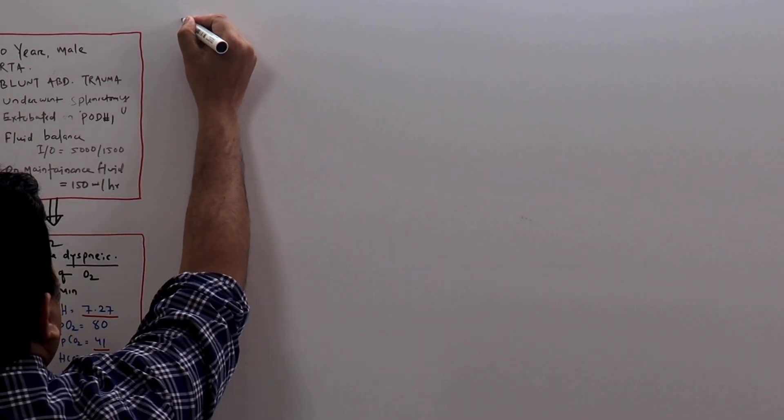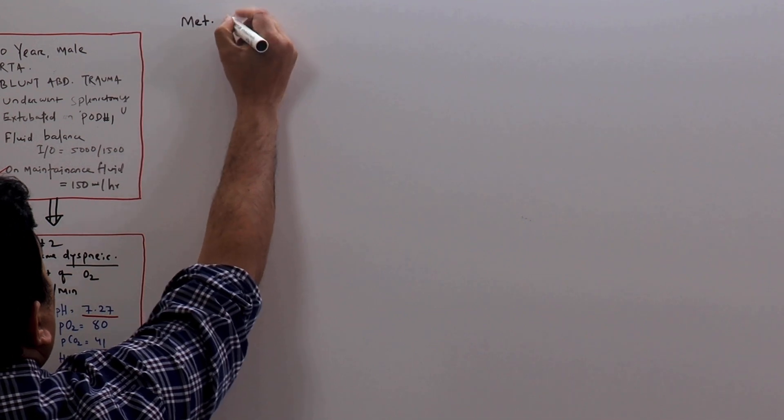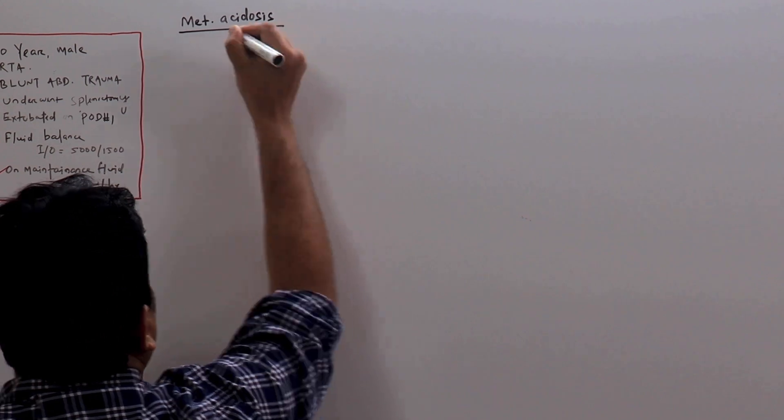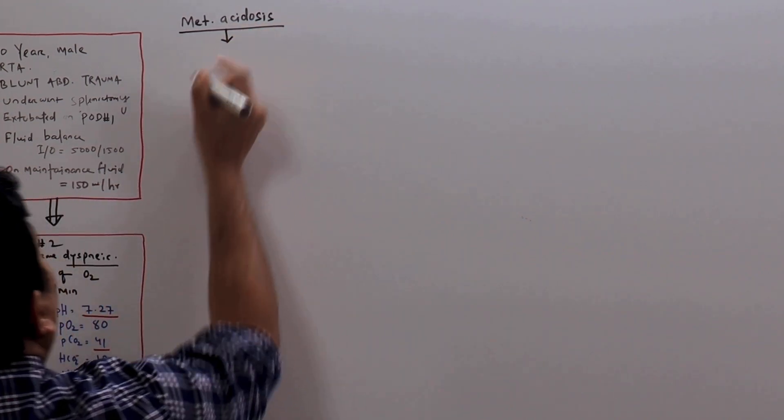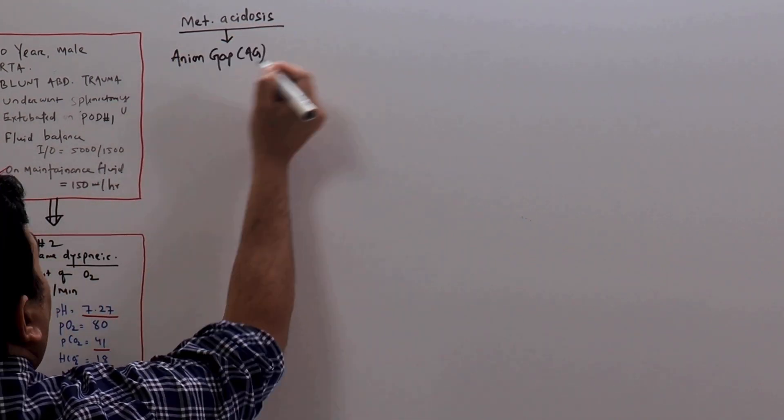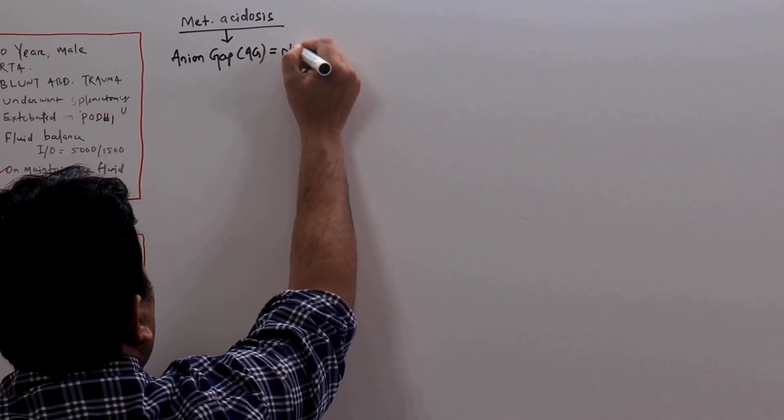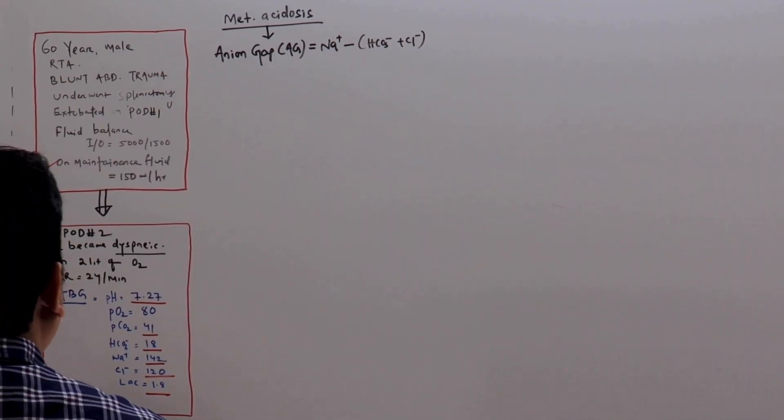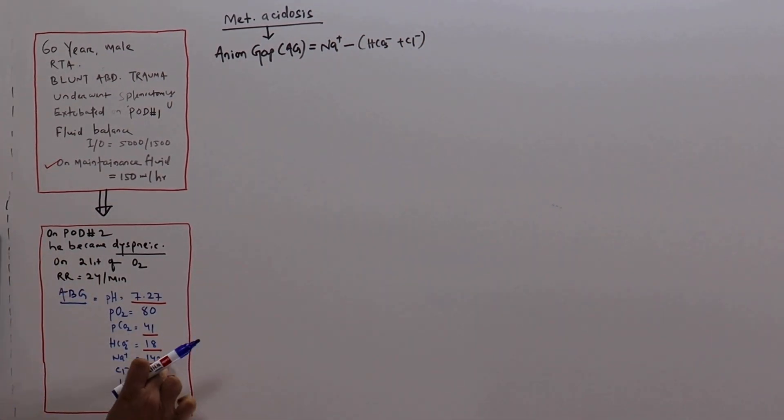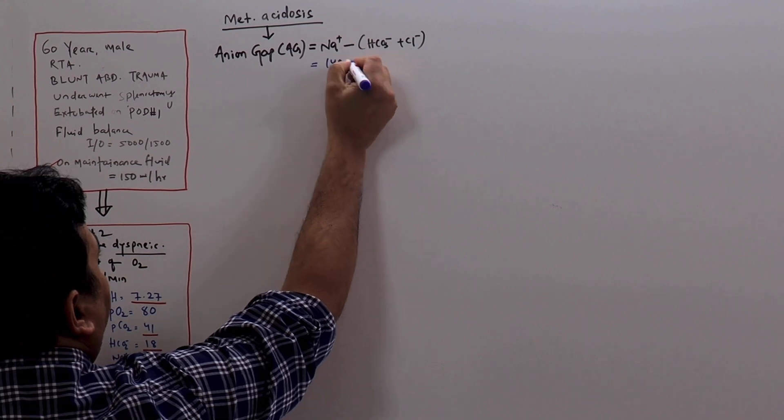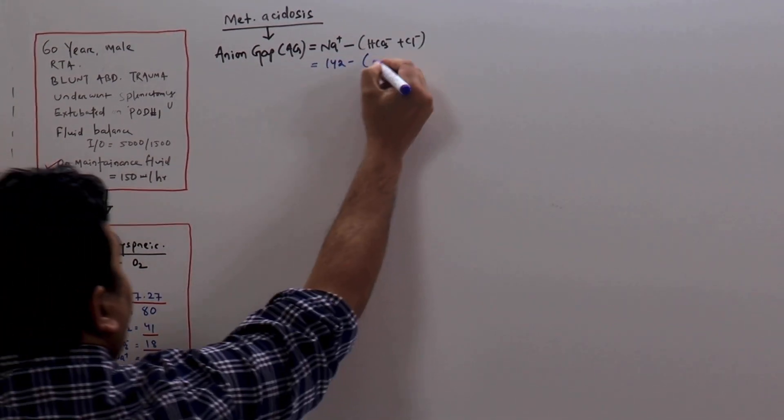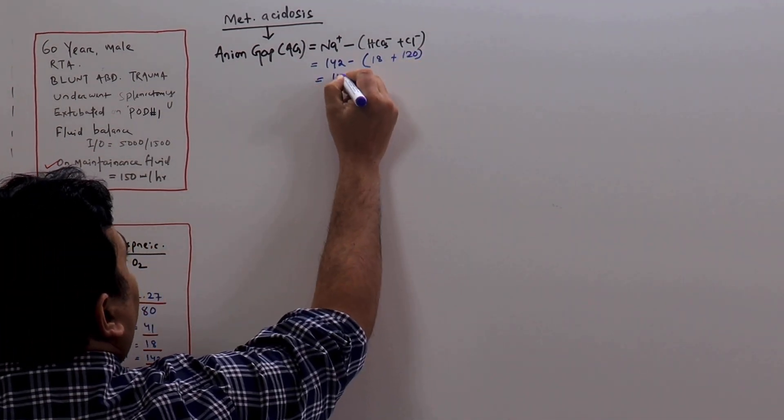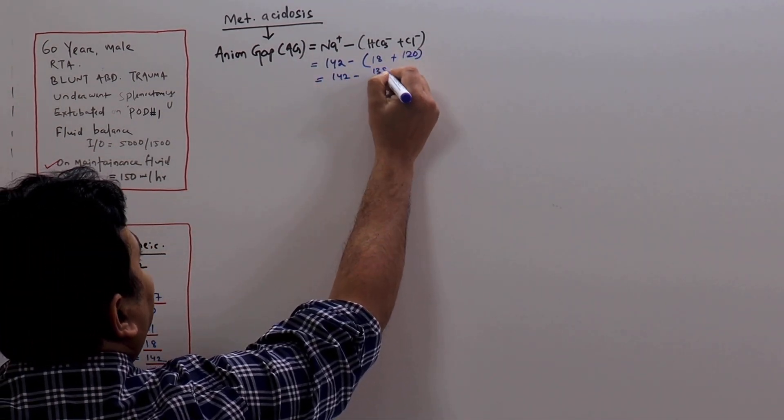This is a case of definitely metabolic acidosis. For any case of metabolic acidosis, the next step is to find out what is the anion gap. The formula for anion gap is sodium minus bicarbonate plus chloride. In this particular case, if you see from the ABG, the sodium is 142 minus the bicarbonate is 18 plus the chloride is 120. So this is 142 minus 138, which is 6.